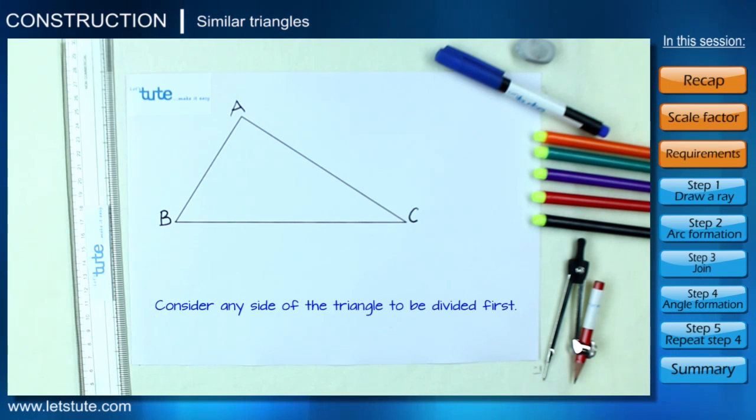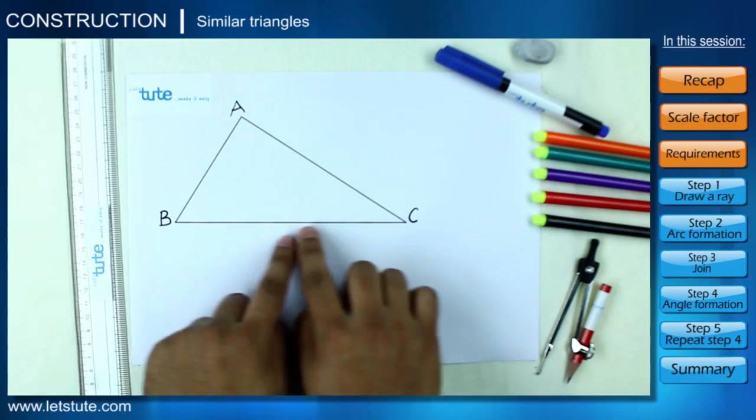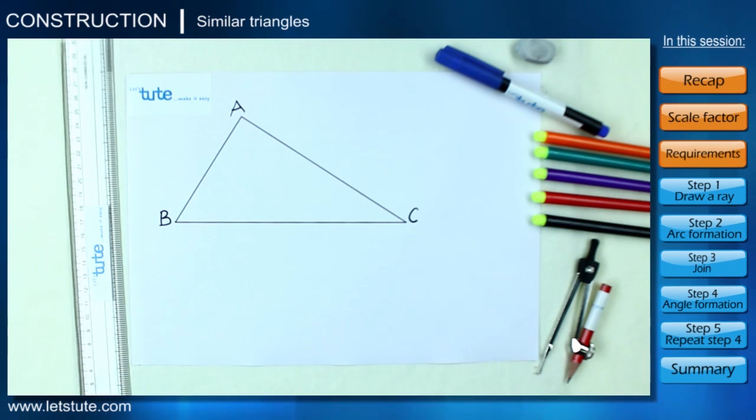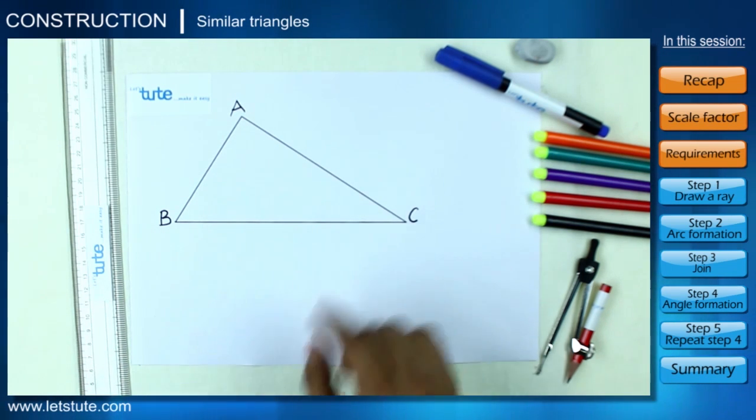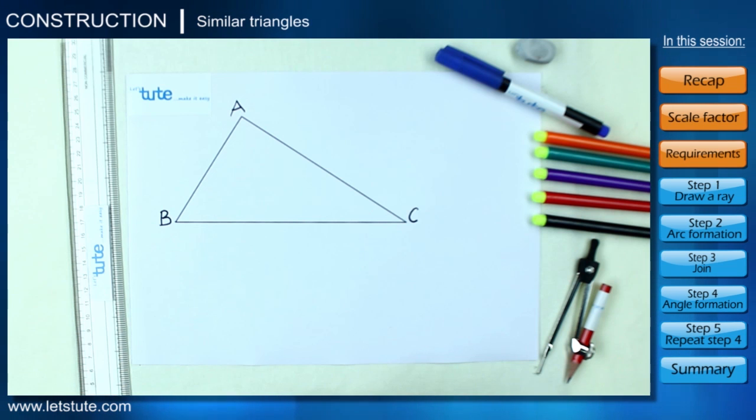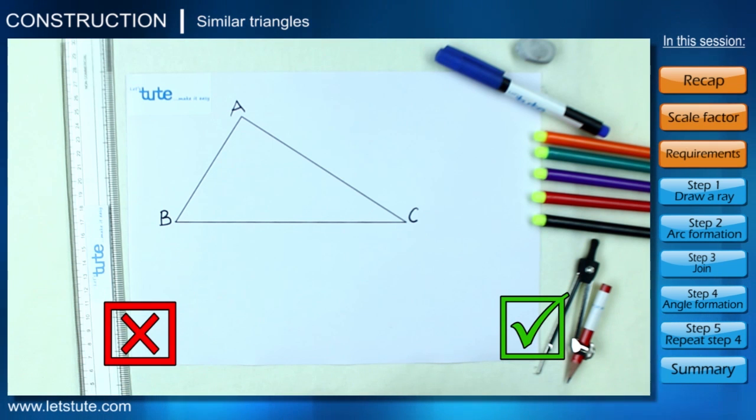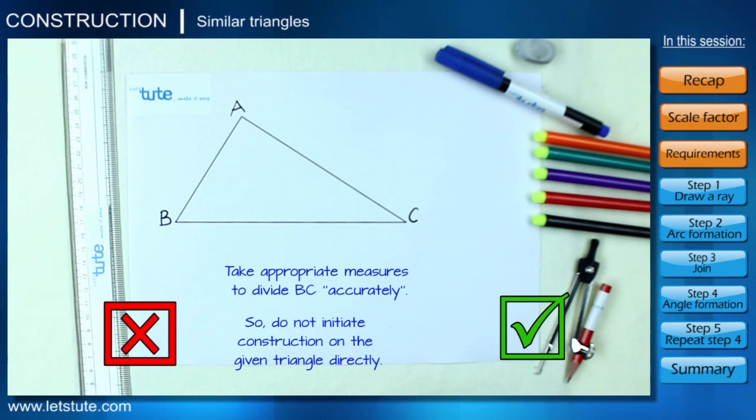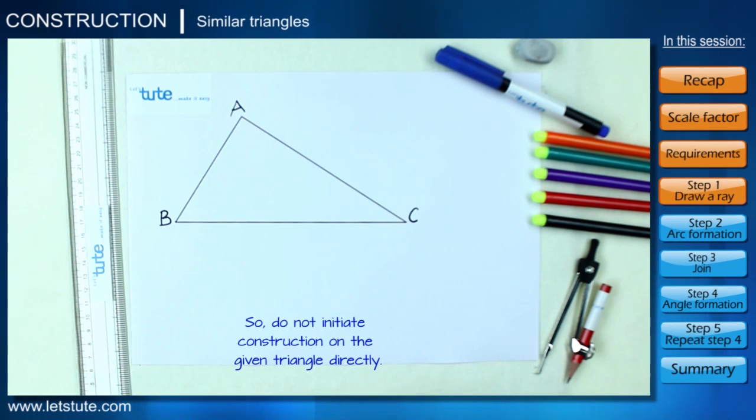Now let us go step by step and understand all the steps of construction. First of all, we have to consider any side of the triangle to be divided first. Just for convenience sake, I am taking the side BC. But we cannot directly start dividing the side BC in three equal parts because remember, we only have to use the compass and not a measuring scale. In such a case, we can't take a risk of dividing BC inaccurately, and since geometrical construction is all about drawing accurately, we'll have to take appropriate measures.